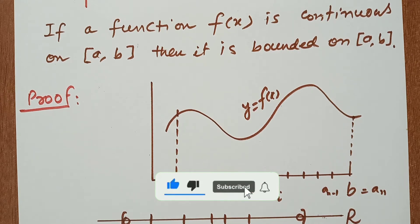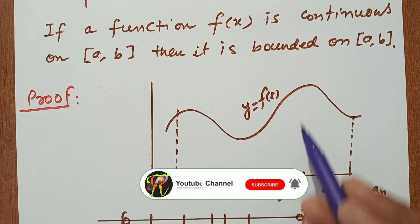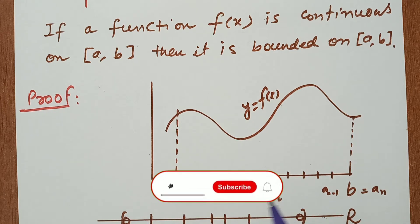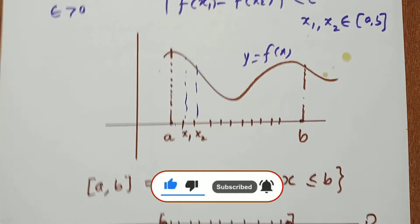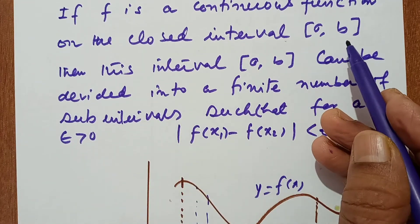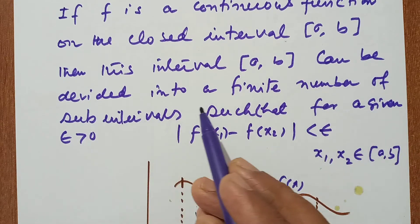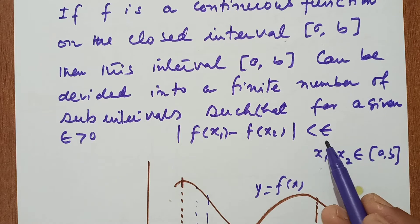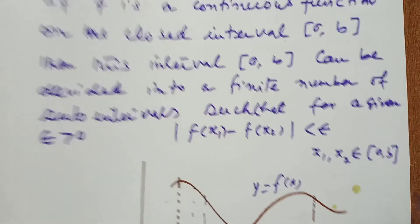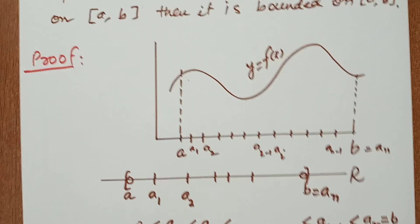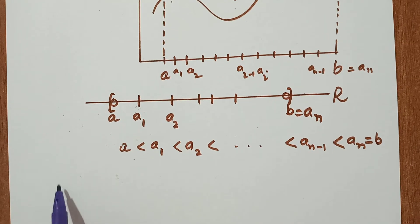As we know by Borel's theorem, if a function is continuous on a closed interval [a,b], then this closed interval [a,b] can be divided into a finite number of sub-intervals such that |f(x₁) - f(x₂)| < ε for all x₁, x₂ belonging to [a,b]. We shall use this theorem to prove the boundedness theorem.